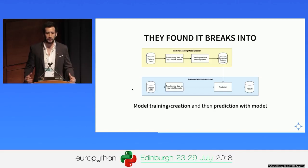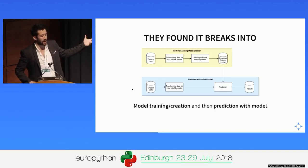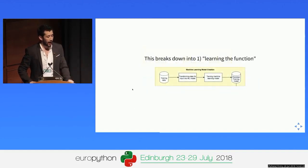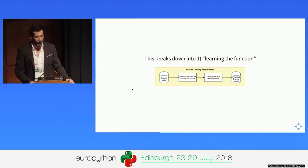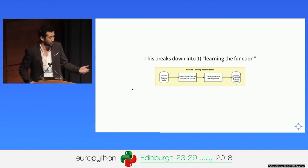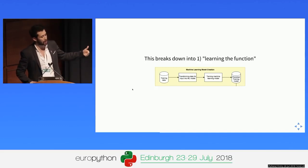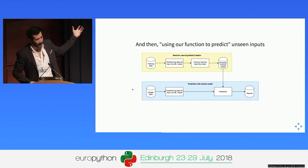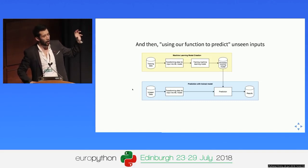In a generic, very abstract perspective, machine learning pipelines break into two different workflows: model training/creation — actually creating the function — and then using that model to predict unseen data. The training part breaks down into finding your training and test data, transforming the data so it can be input into your chosen ML model, then actually training the model. Once you're happy, you persist that model. Once persisted, you can take any unseen data, transform it, run it through your model, obtain a prediction, and get the results.